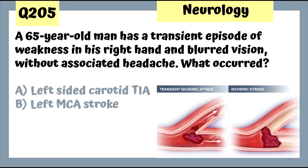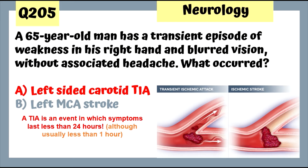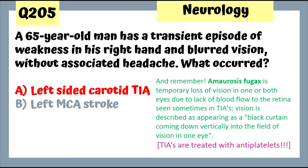Question 205: A 65-year-old man has a transient episode of weakness in his right hand and blurred vision without associated headache. This is a left-sided carotid TIA. A TIA by definition is an event in which symptoms last less than 24 hours, although usually less than one hour. The fact that this episode was transient tells us we're dealing with a TIA, and TIAs are treated with antiplatelet therapy.